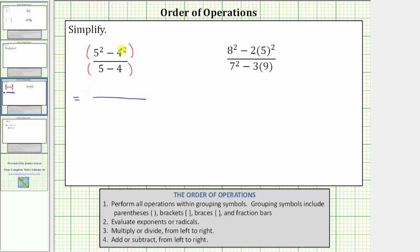Beginning in the numerator, we have exponents and subtraction. We simplify the exponents first. Five squared equals 25. Four squared equals 16. The numerator simplifies to 25 minus 16.